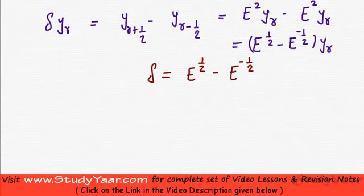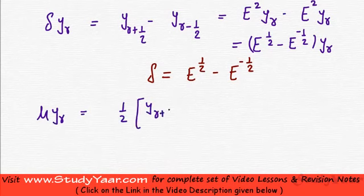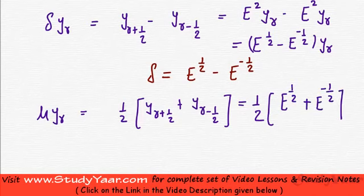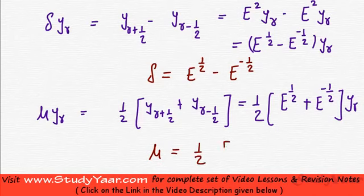Similarly, the averaging operator mu·YR is equal to half of YR plus half plus YR minus half. This comes out to be half of E raise to power half · YR plus E raise to power minus half · YR. So the averaging operator mu is essentially equal to half into (E raise to power half plus E raise to power minus half).